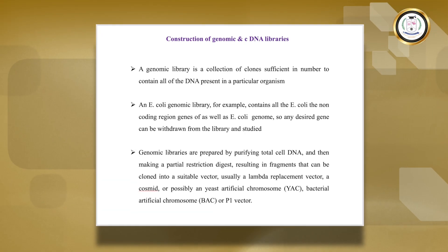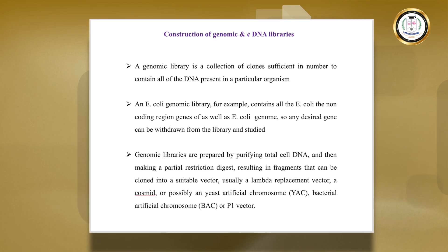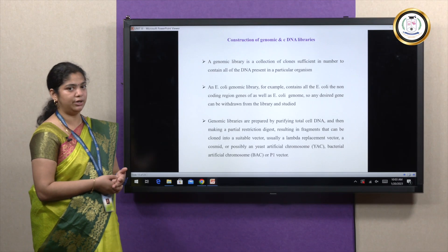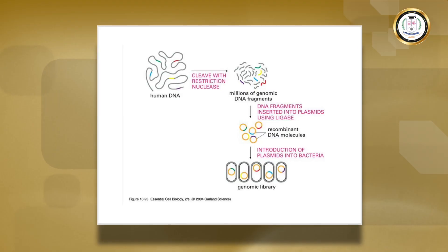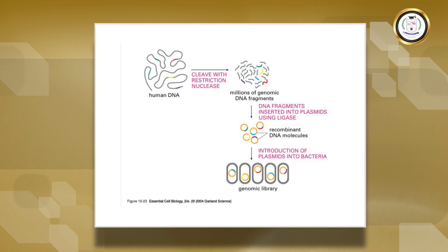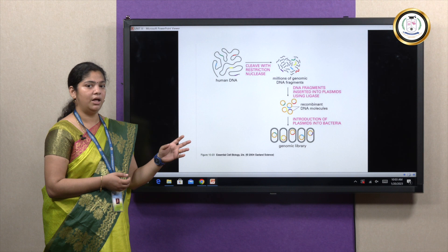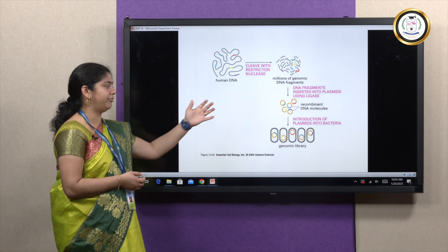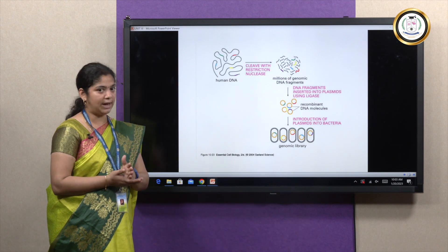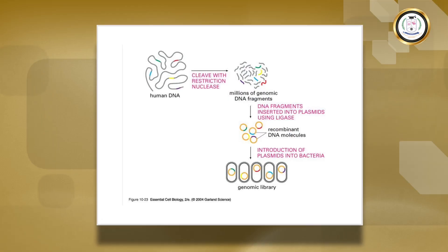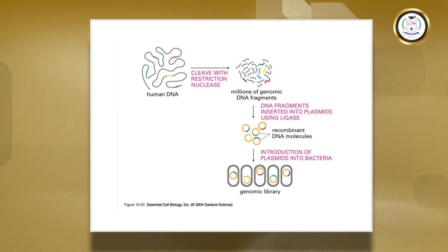Libraries are prepared by purifying the total cellular DNA. The total genomic DNA is isolated and partially inserted into a vector — the vector can be a lambda vector, BAC vector, or YAC vector. Once the total human genome content is restriction digested, millions of copies of fragments are obtained. These fragments are introduced into plasmids, generating various plasmid clones that form the genomic library.